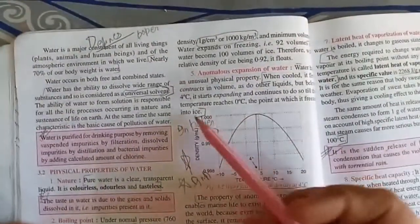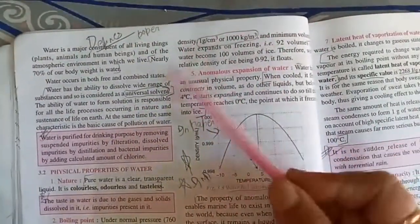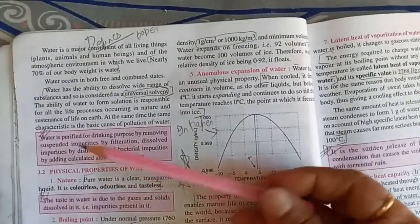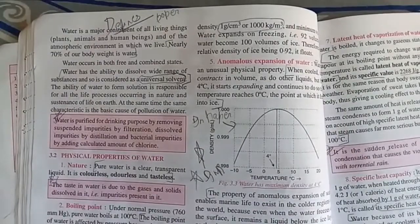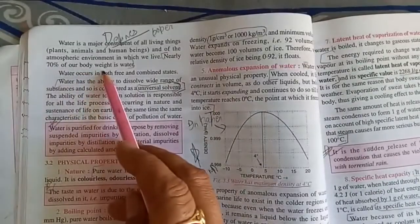On page number 34, you know water is a major constituent of all living things, that is plants, animals, and human life. Even 70 percent of our body weight is water only.